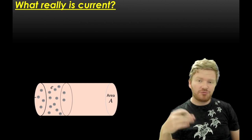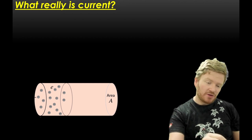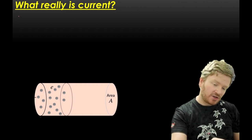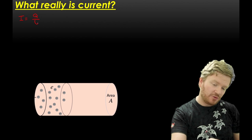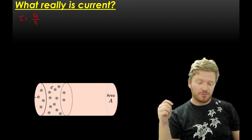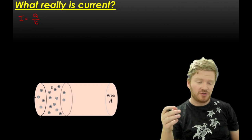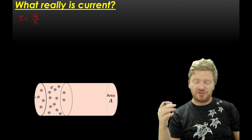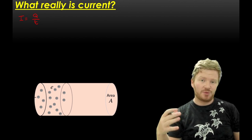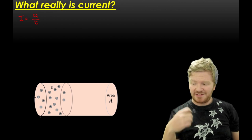So the first thing to think about is what really is current? Current, which has the symbol I, is equal to the rate of flow of charge - the total amount of charge that moves through a wire or a component per second. Hence Q for total amount of charge divided by T.